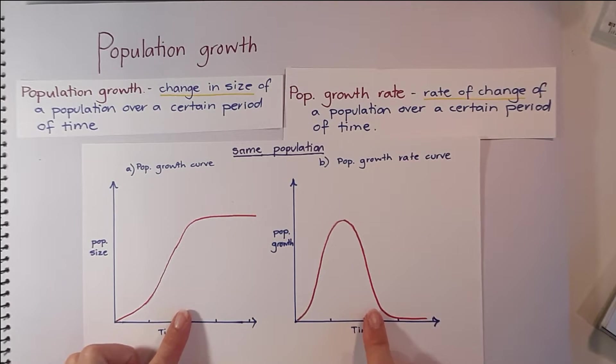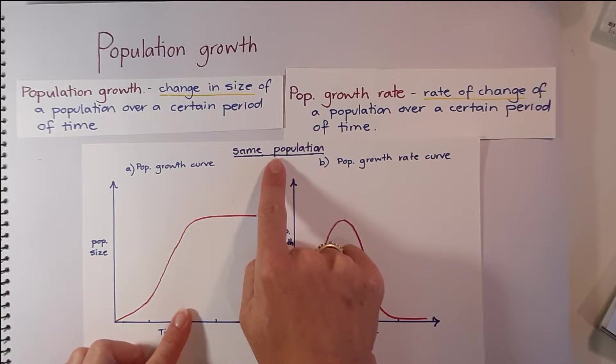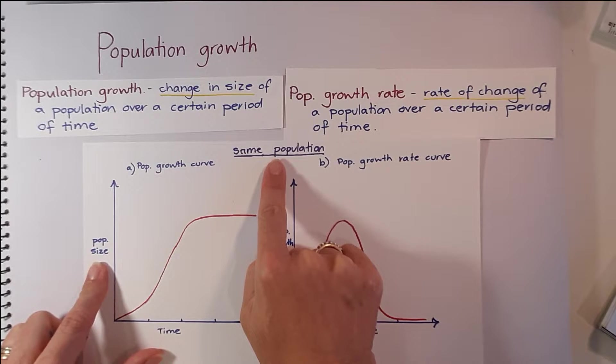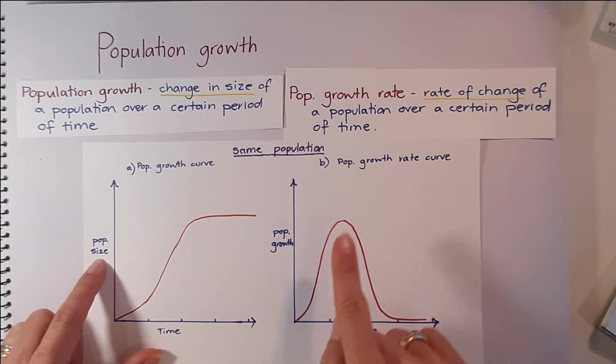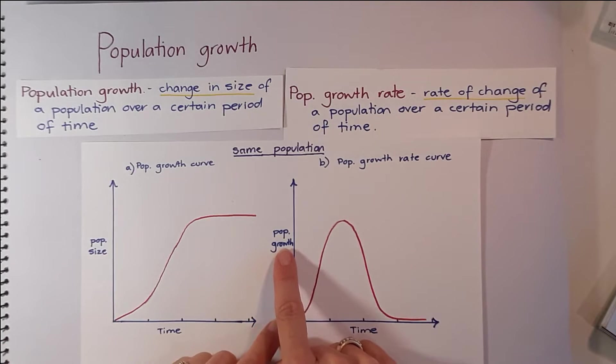These two graphs are representing the same population. This one though is population size, so the number of individuals, whereas this one is showing the change in the population and the rate of change over a period of time.